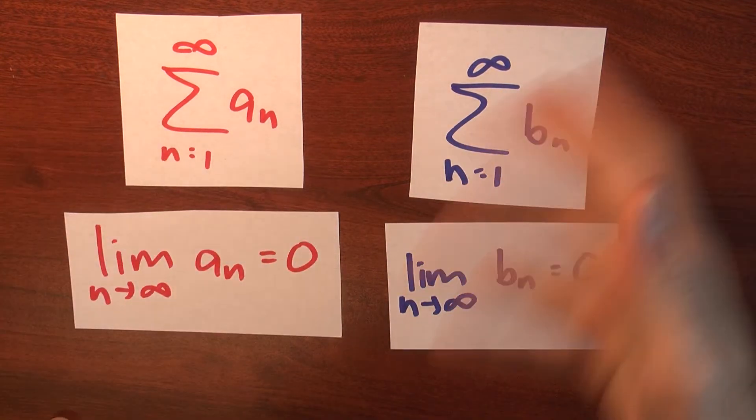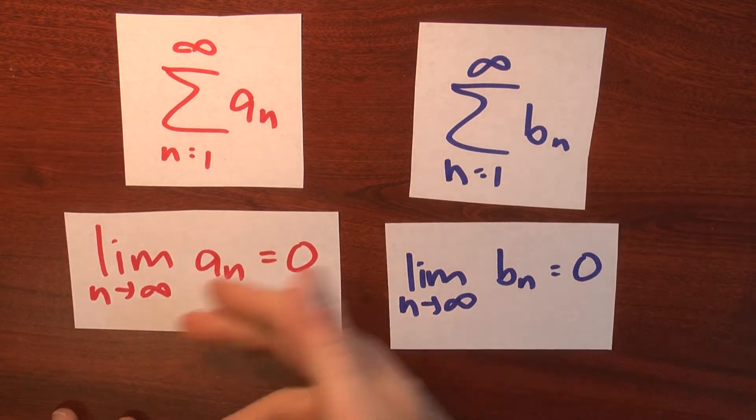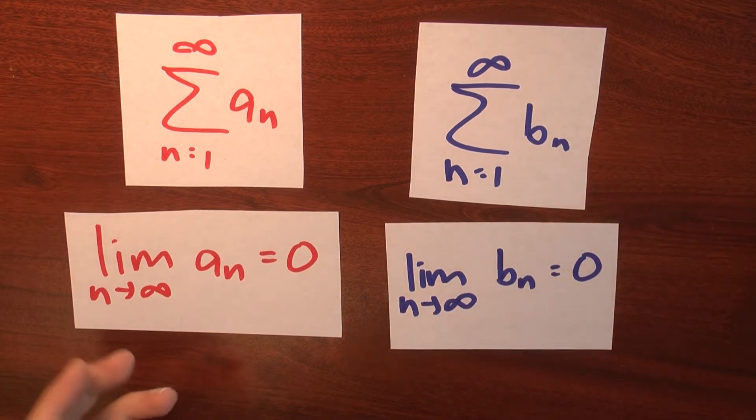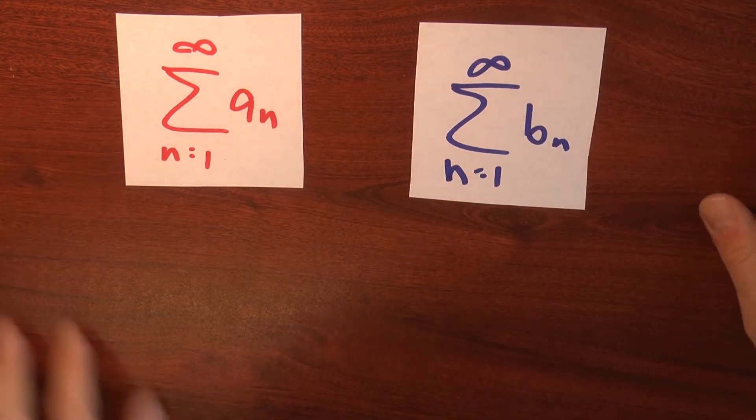So at least these series aren't diverging for an obvious reason, like the limit of the nth term is non-zero. So you've got two series that may or may not converge.